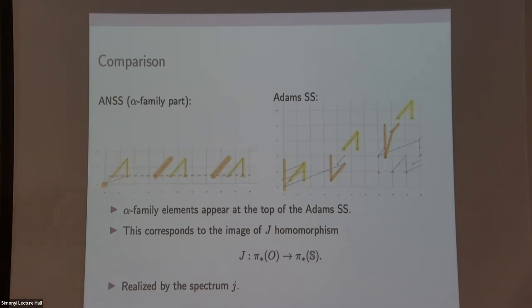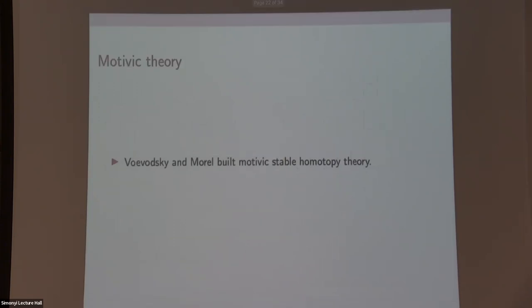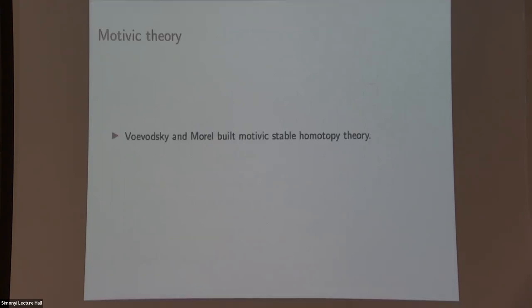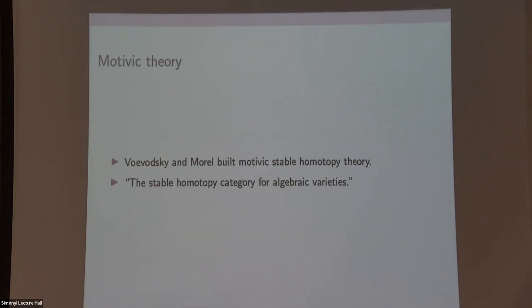When I was writing this talk, I tried my best not to use the word spectrum, but it's just not possible. For people who don't know what a spectrum in homotopy theory means: spectra are the spaces in the stable settings. We just treat them as spaces. This is the classical story. This is well studied and well understood. Now let's look at an enhancement of this, the motivic theory. The motivic theory is developed by Voevodsky and Morel.